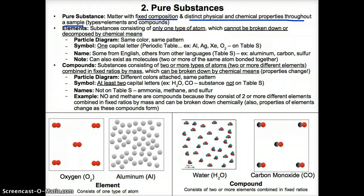For example, water will always have two hydrogens and one oxygen. And aluminum will always have one aluminum atom. Also, the physical and chemical properties are distinct and uniform throughout. So everywhere where you have oxygen molecules in this particle diagram box, the particles are gases throughout that are transparent. Aluminum is a silvery kind of metal throughout. And water is clear and liquid throughout.